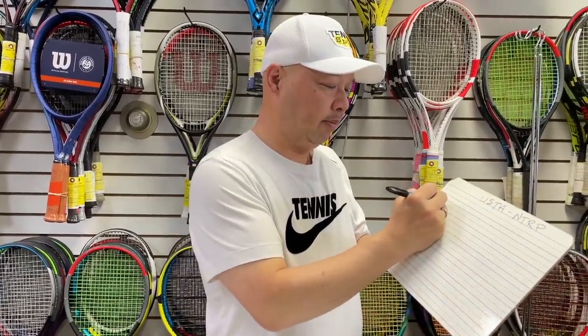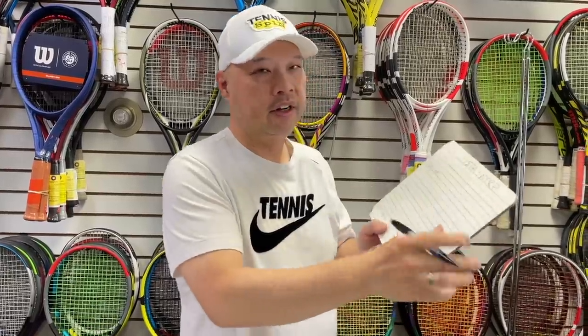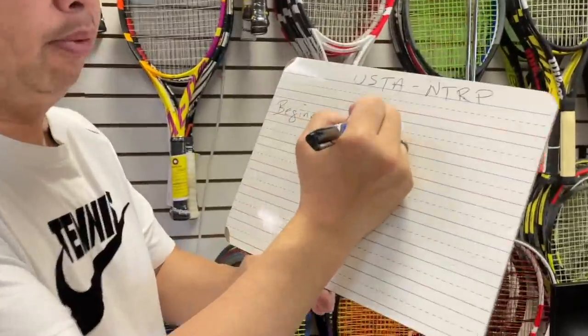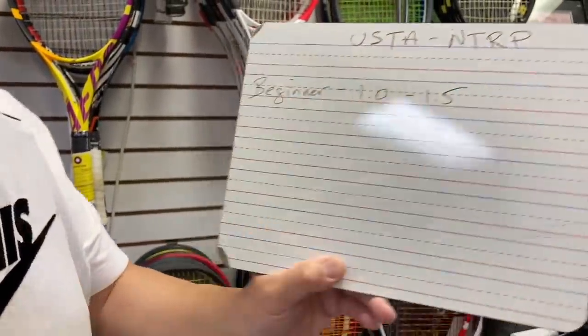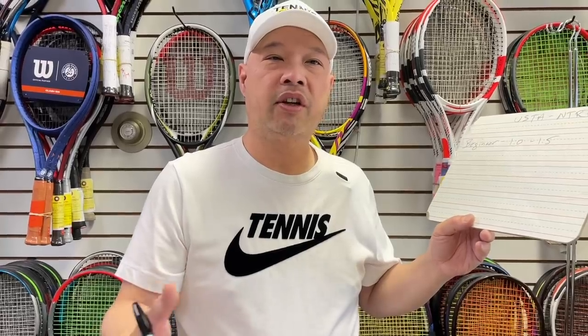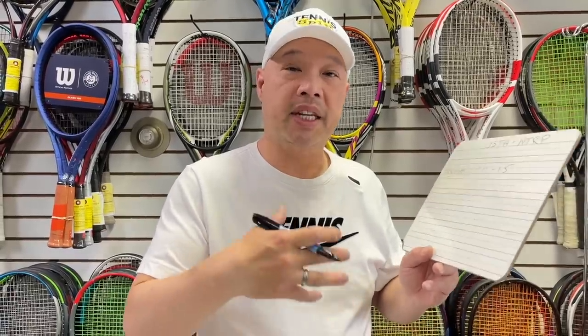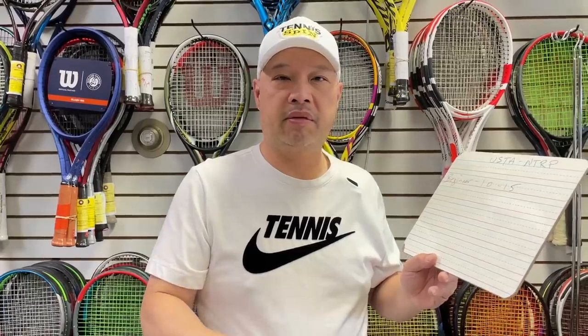So here are the simple guidelines. Starting with beginner: if you're just picking up a racket, you're a 1.0 to a 1.5. You're learning the game, you don't really know what you're doing, but you're having fun. You want to progress, you want to learn. You don't really know the rules yet — you possibly don't even know the scoring. You're literally a beginner.